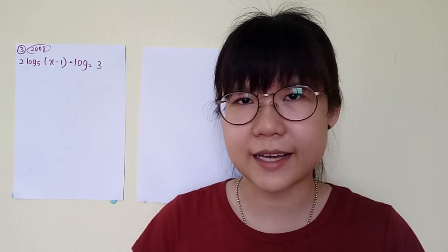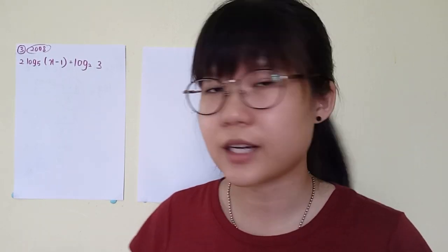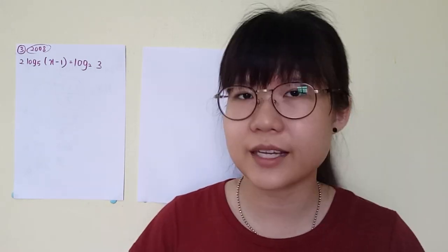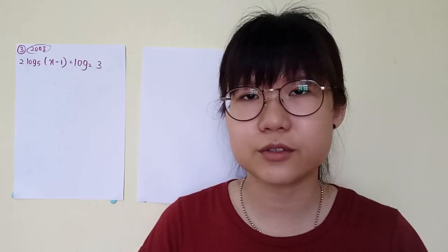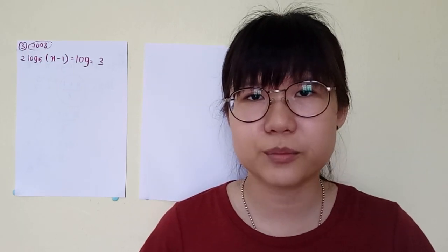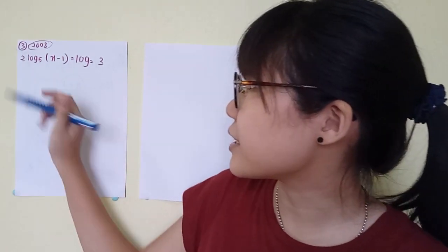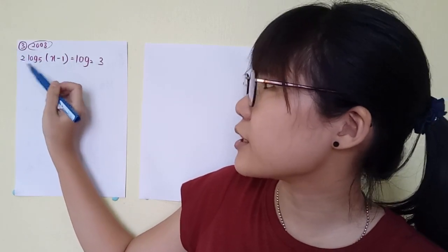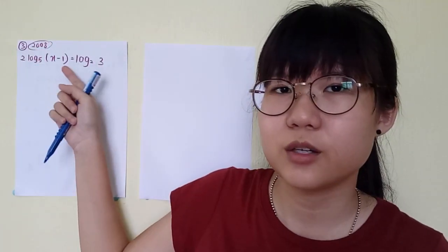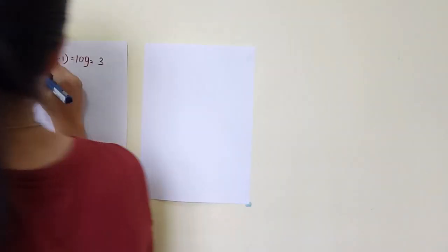We change to log 10 because the log button on the calculator gives log base 10, so we can get exact values. Before changing any base, make sure there's nothing in front of the log — it has to be one expression without any coefficient. So first move any coefficient away, then proceed to change the base.